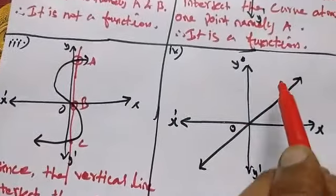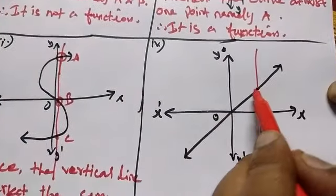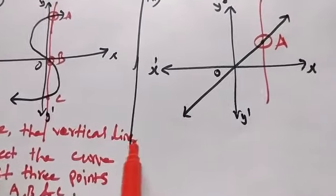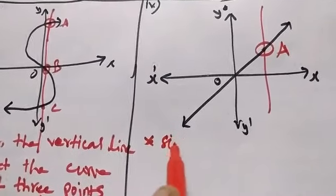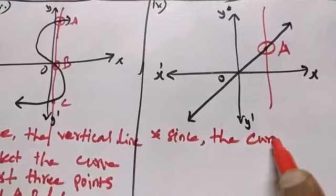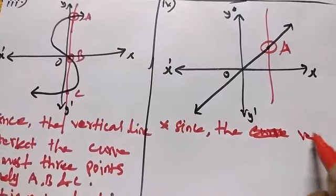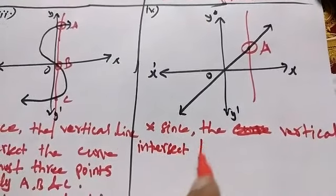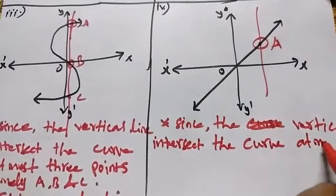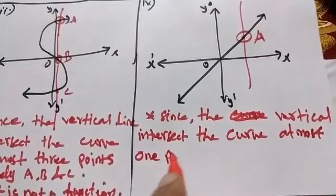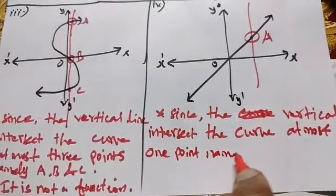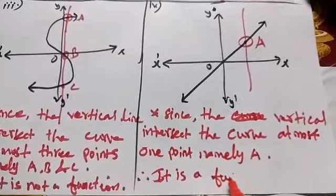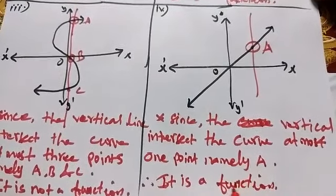namely a, b, and c, therefore it is not a function. For the fourth one, the x-axis gives a function — this is the vertical line. The given curve has one point, therefore it is a function. The reasoning gives point e, therefore it is a function.